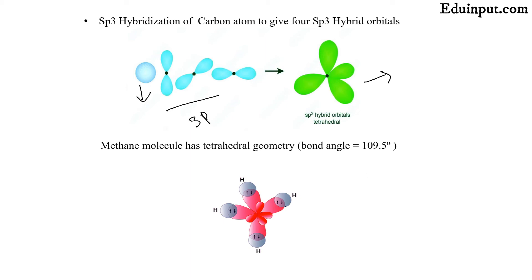We can see that four hydrogen atoms are attached, giving tetrahedral geometry.